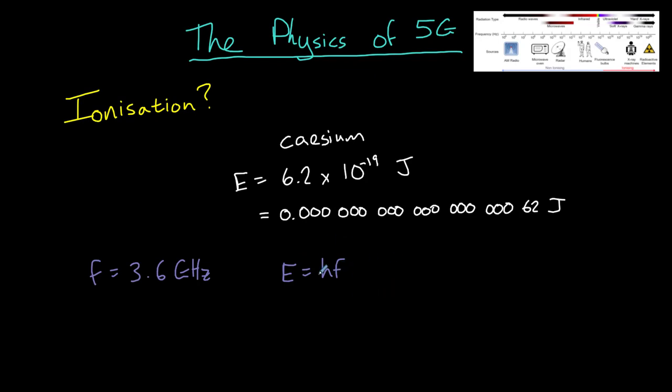H here is a constant known as the Planck constant. It has a value of 6.63 times 10 to the power of minus 34. And we multiply that by the frequency of the 5G microwave radiation, which is 3.6 multiplied by 10 to the power of 9 because it's gigahertz. It's 3.6 billion hertz. And that gives us an answer of 2.4 times 10 to the power of minus 24 joules.